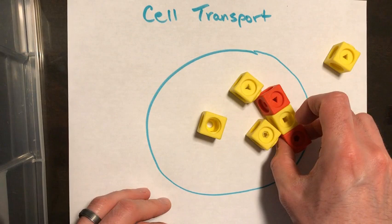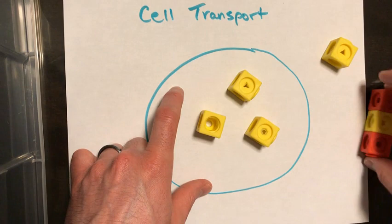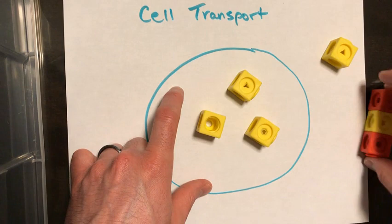So osmosis would be the flow of water into the cell from hypotonic to hypertonic. Diffusion would be the flow of the solute particles from hypertonic to hypotonic if they were able to actually cross the membrane, and in most situations they're not.